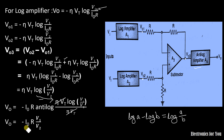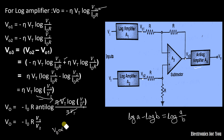Here V1 and V2 are input voltages, I0 is the saturation current, and R is the resistance — these two are constants. Therefore, the output voltage V0 is directly proportional to V1 upon V2, which is the ratio of input voltages. This is why the circuit is known as a divider.